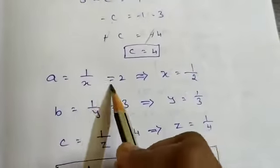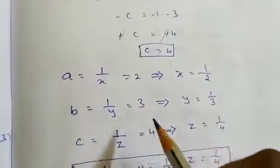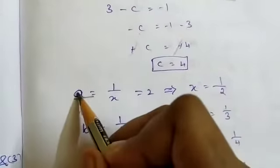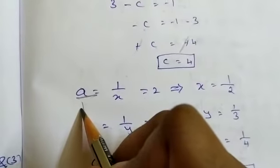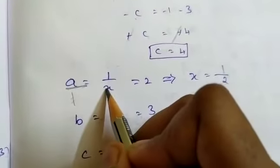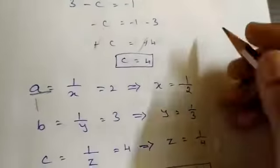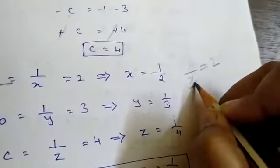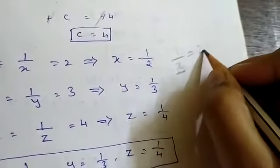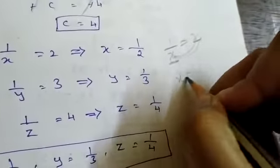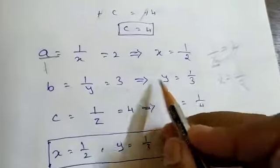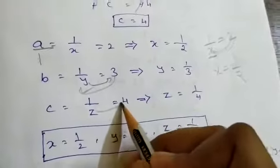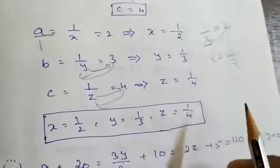Since A equal to 1 by x equal to 2, we get x equal to 1 by 2. Because 1 by x equal to 2 means we bring x up and 2 down, so x equal to 1 by 2. Similarly, B equal to 1 by y equal to 3, giving y equal to 1 by 3, and C equal to 1 by z equal to 4, giving z equal to 1 by 4.